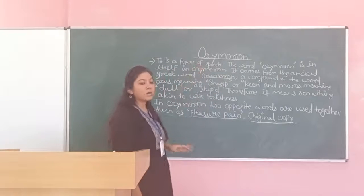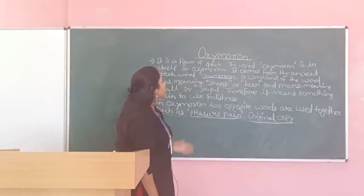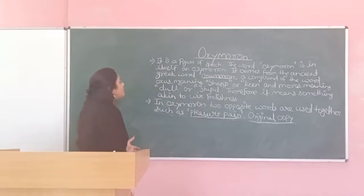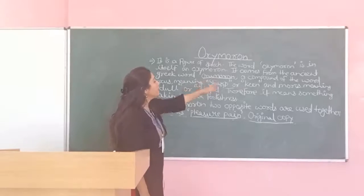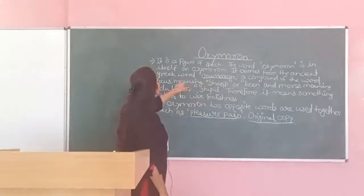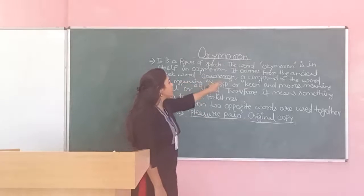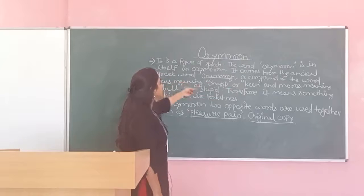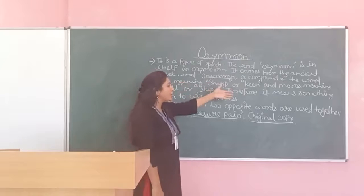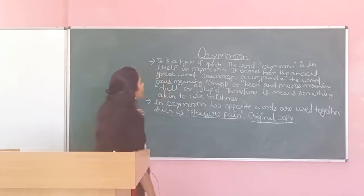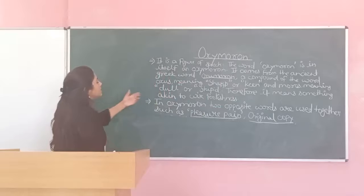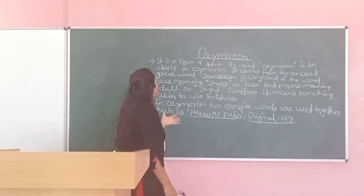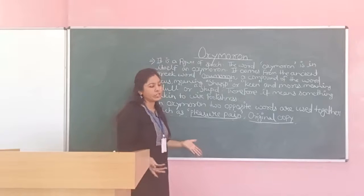What is oxymoron? Oxymoron is a figure of speech. The word oxymoron is in itself an oxymoron. It comes from the ancient Greek word oxymoron, a compound word where 'oxus' means sharp or keen and 'moros' means dull or stupid. Therefore it means something akin to wise foolishness.